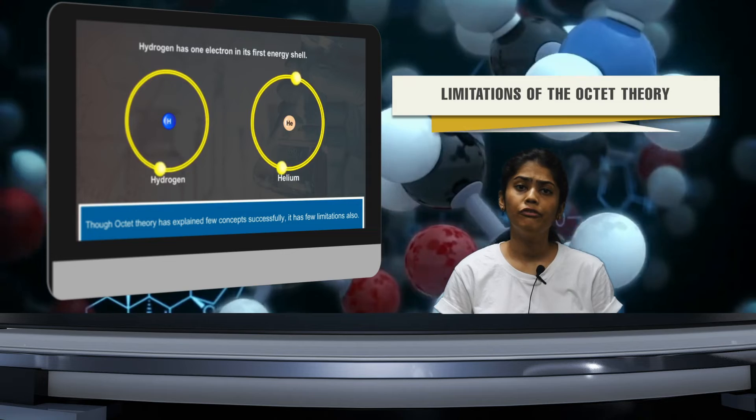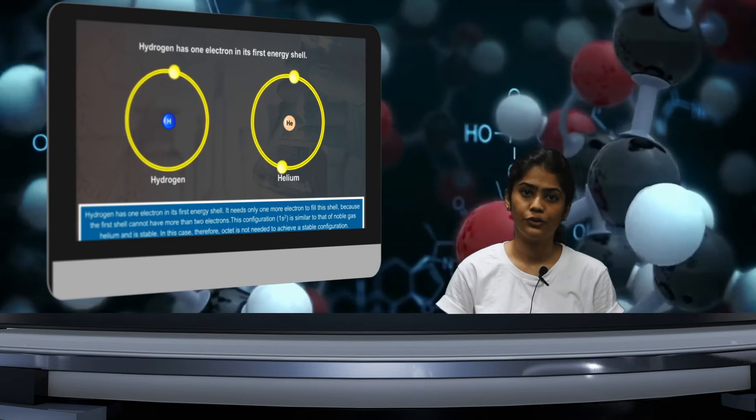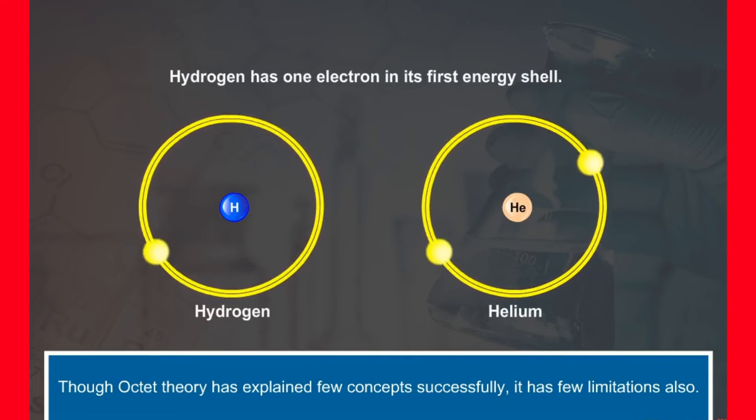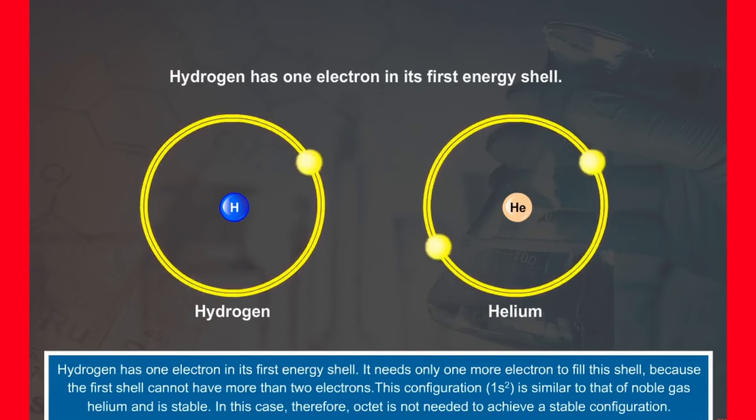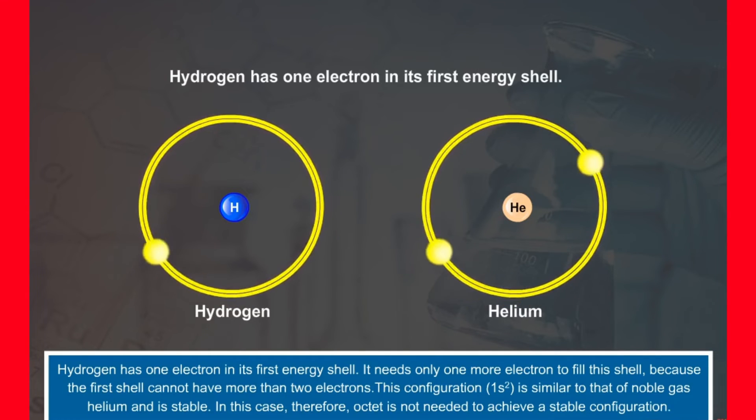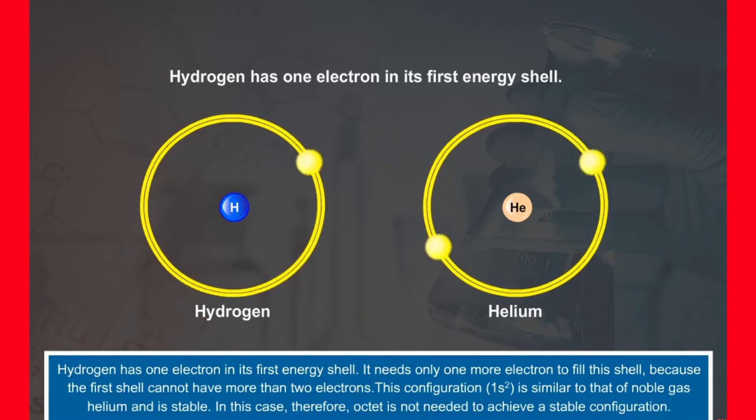This video will bring a brief introduction to what is octet theory and its limitation as of what limits the octet theory further. Limitations of the octet theory: though octet theory has explained few concepts successfully, it has few limitations also. Hydrogen has one electron in its first energy shell. It needs only one more electron to fill this shell because the first shell cannot have more than two electrons. This configuration 1s2 is similar to that of noble gas helium and is stable. In this case therefore, octet is not needed to achieve a stable configuration.